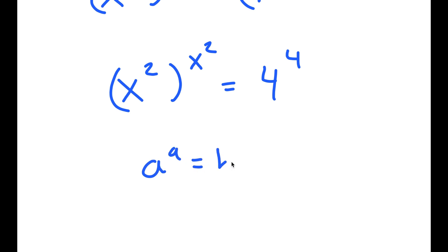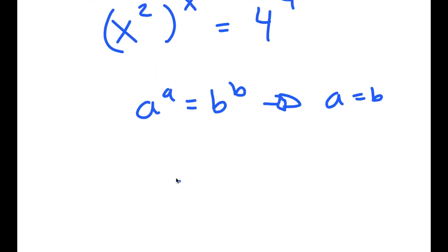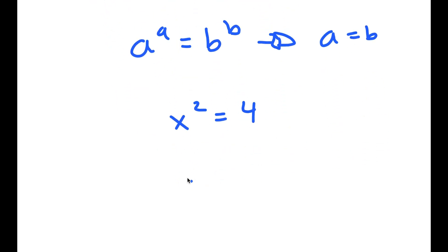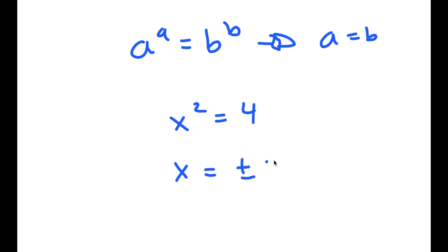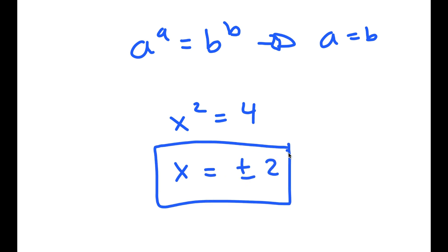Now, if I have something in the form a to the power of a is equal to b to the power of b, this means that a is equal to b. So in this case, x squared is equal to 4 and x is equal to positive or negative 2. So these are my two solutions.